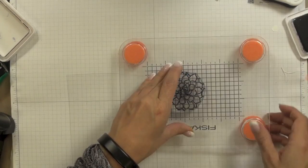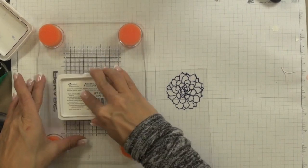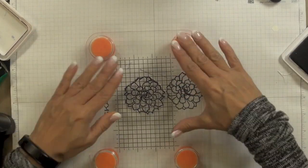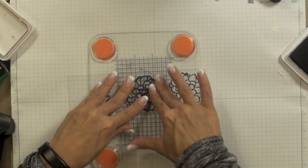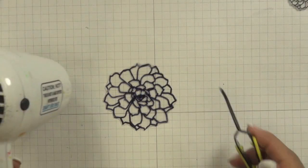Now because stamping on plastic can be a little tricky because of the slick surface and you don't necessarily get perfectly crisp lines every time, I stamped more images than I knew I would need and then I cut each one out with a pair of fine tip scissors.